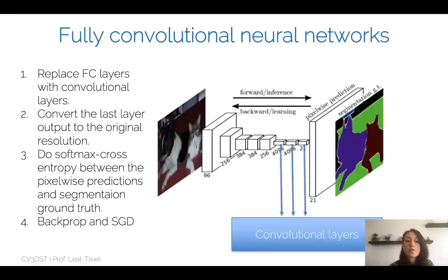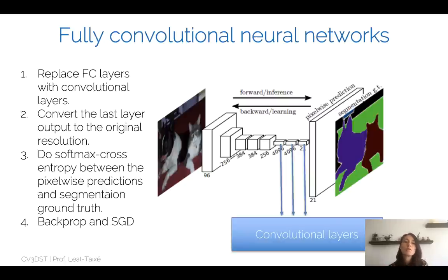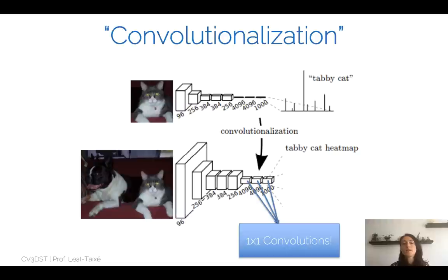To train this network, we perform softmax cross entropy between the pixel-wise predictions and the segmentation ground truth — a loss per pixel indicating whether the predicted class is correct. Then we backpropagate and train the network. This is the standard way to convert an image classification network into a fully convolutional network that outputs a semantic map. The key operation is 'convolutionalization' — converting fully connected layers into equivalent 1×1 convolutions.